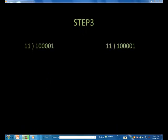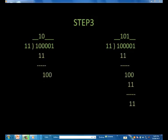Step three: moving one place over, can 11 go into 10? No, so we record a zero in the quotient, subtract, and carry down the next bit, as seen on the left-hand side of the screen. Moving over another place, we ask again: can 11 go into 100? Yes, so we record a one in the quotient, as seen on the right part of the screen, subtract, and carry down the next bit.